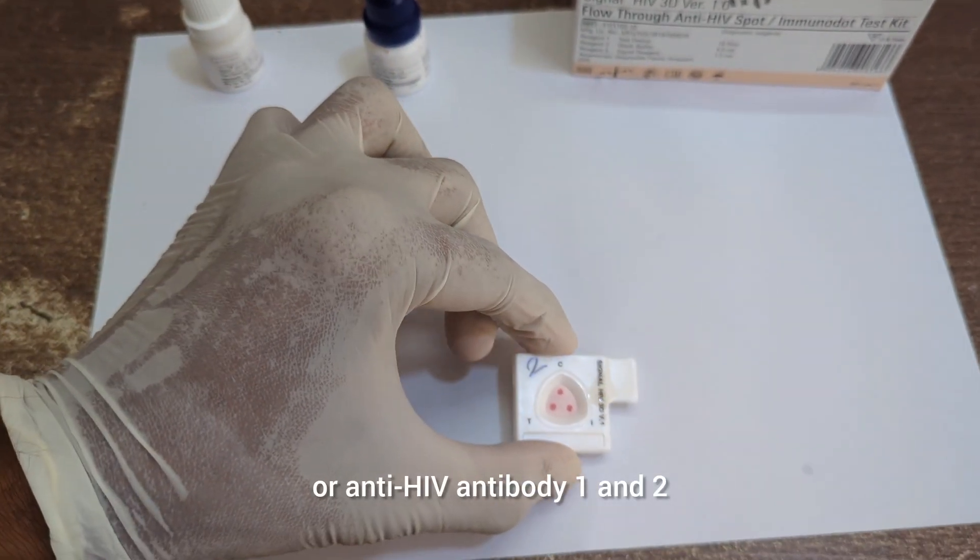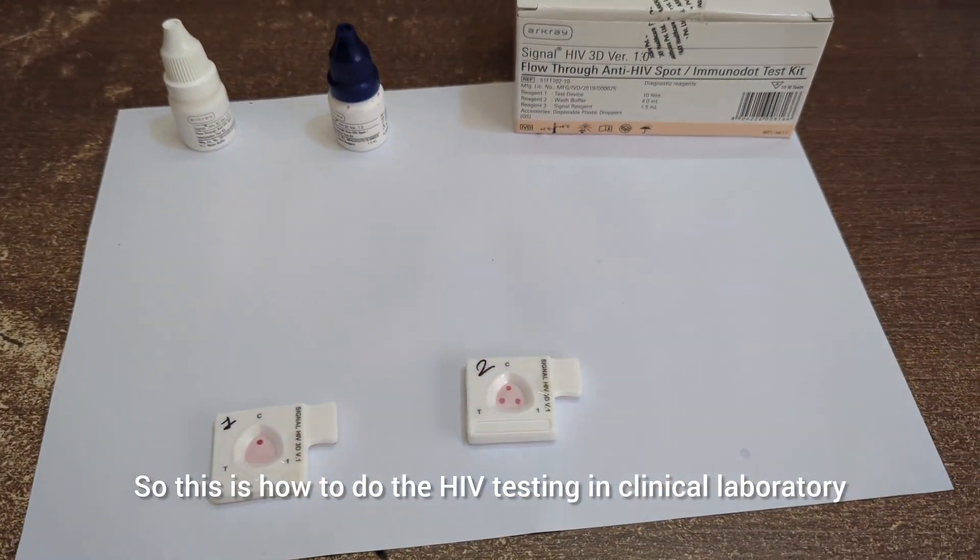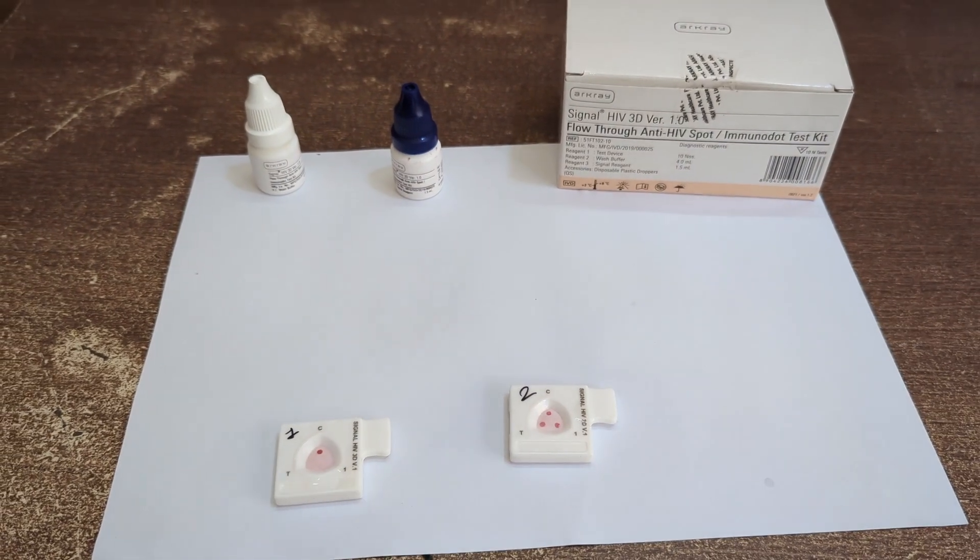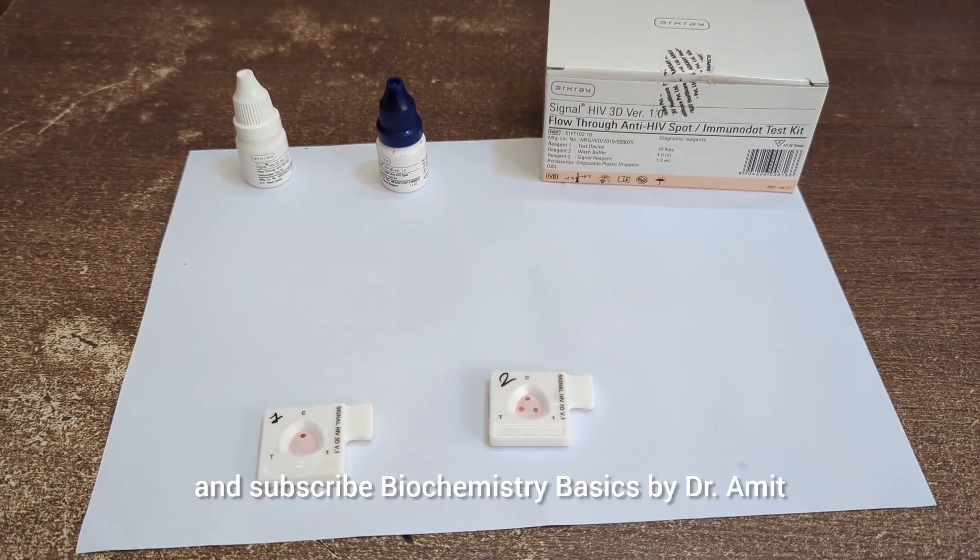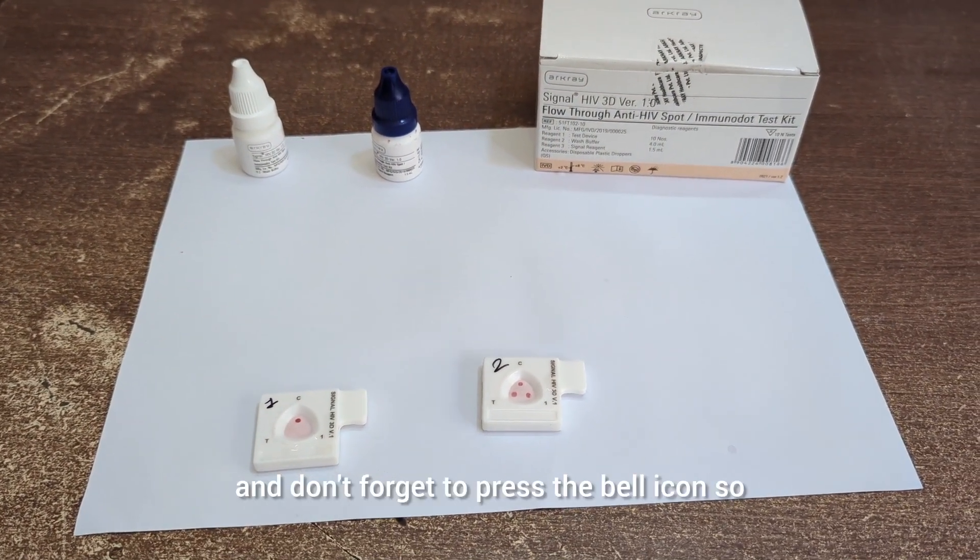While in test kit number two, you can see there are three dots: one at the C, one at the T, and one at the number one. So this sample is positive for HIV, positive for anti-HIV antibody.